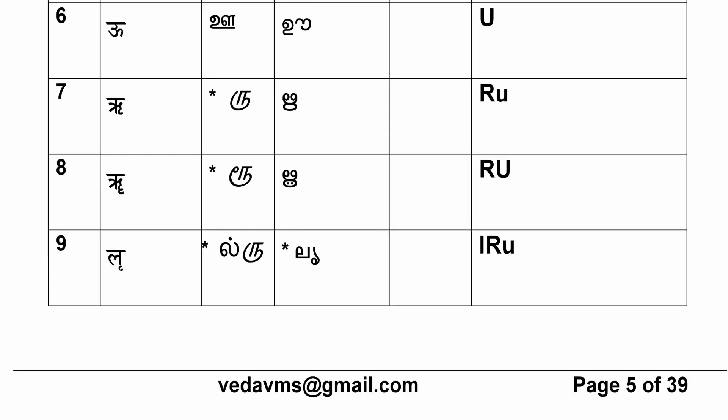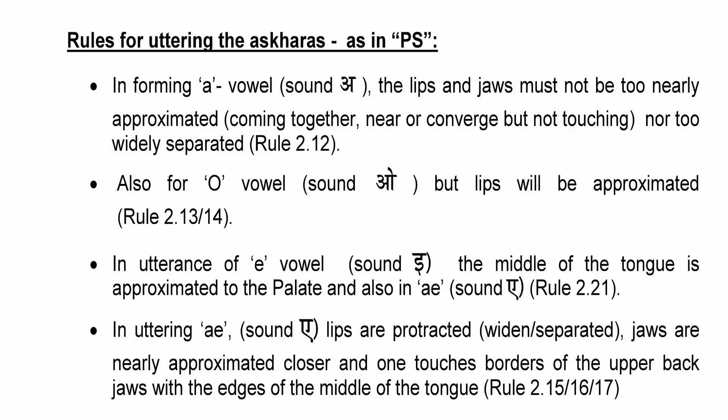When you say 'a', first the throat opens. Your jaws move apart — a normal opening. The tongue sits quietly behind the lower jaw, behind the teeth, and the sound opens out. When you say 'aa', there is no difference in articulation — in the long vowel 'aa', you simply utter it for twice the time scale.